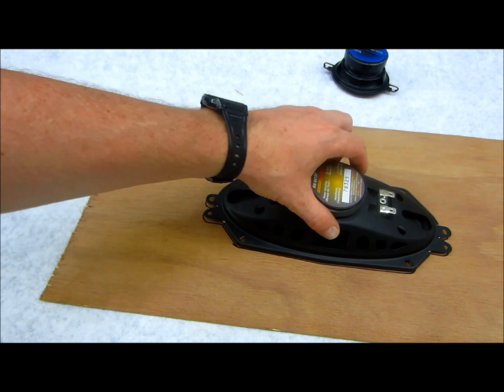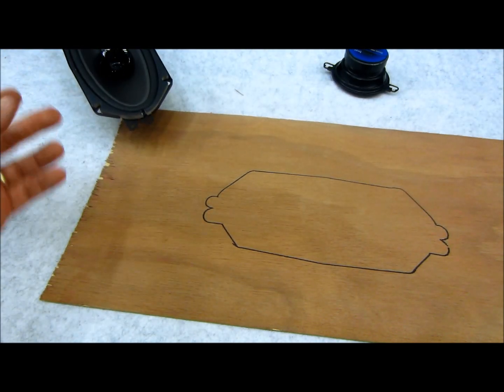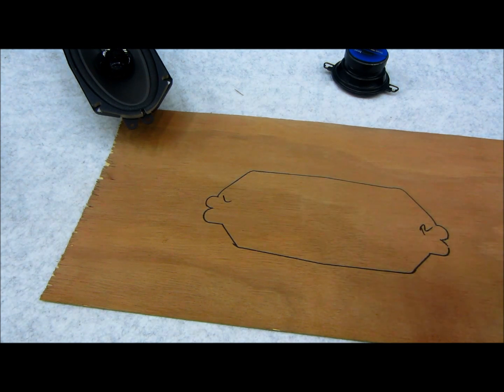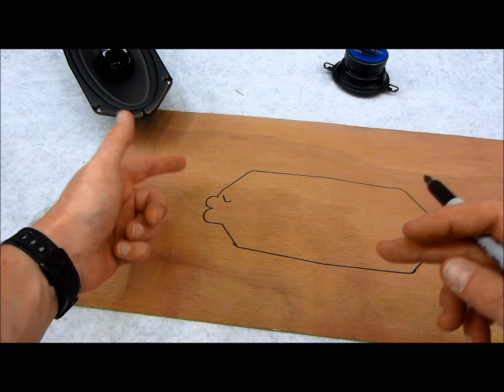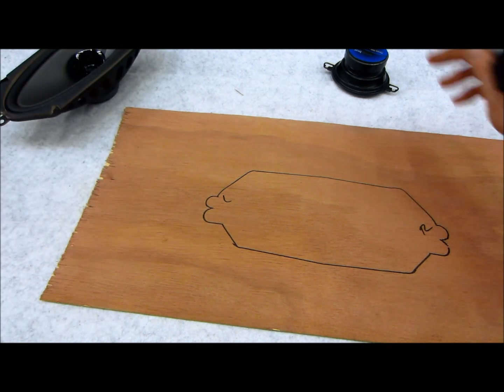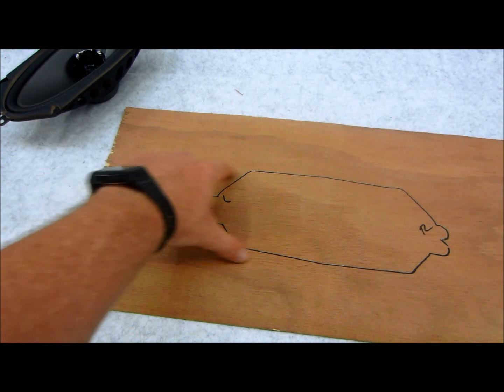Trace it onto your piece of wood, remove it, and make sure that you notate left and right, up and down. Once you put this into the vehicle, you don't want it to be the reverse of how you see it in your mind's eye because that happens - ask me how I know.